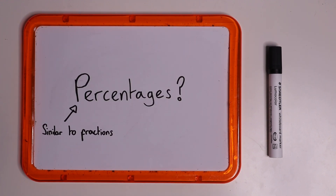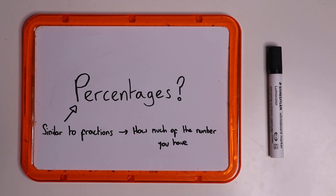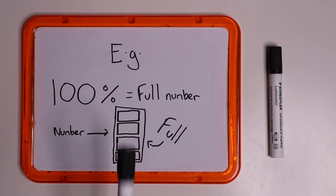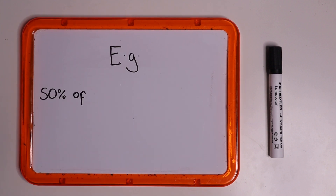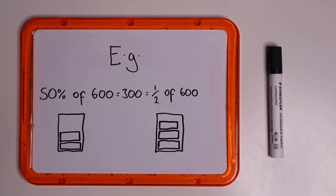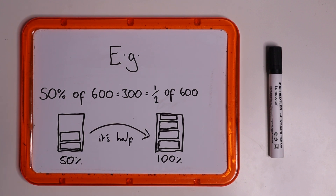Percentages are similar to fractions — you can think of percentages as how much of the number you have, just like with fractions, where 100 percent of a number is the full number. For example, 50 percent of 600 is 300, which is the same as one half of 600, as you can think of 50 percent as half of 100 percent, or half of the full number.